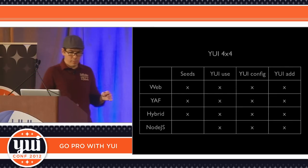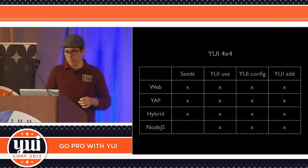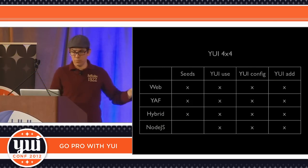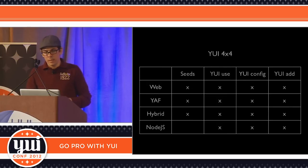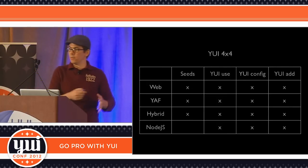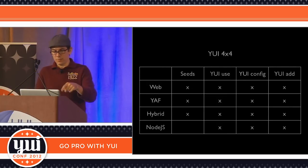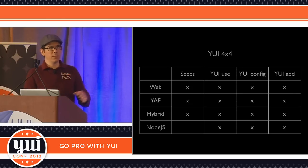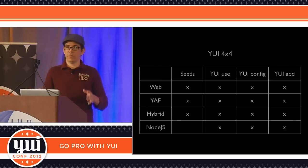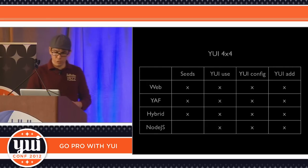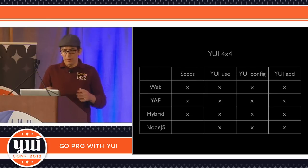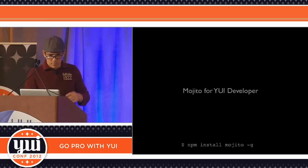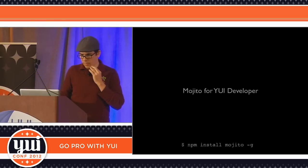Let's do a checkpoint before getting into Mojito. So far, we have four things we need to know how to do when using YUI, and four kinds of applications we can build. The only exception is that in the Node.js environment — the server runtime — there is no seed file to define because you use a Node.js module for that. Mojito should be able to help you with all these different options.